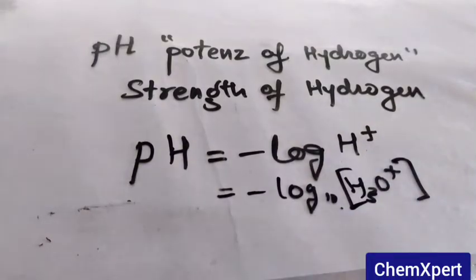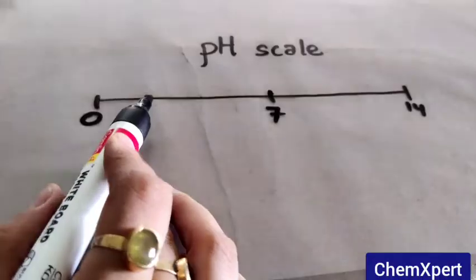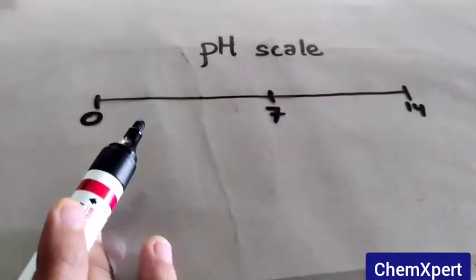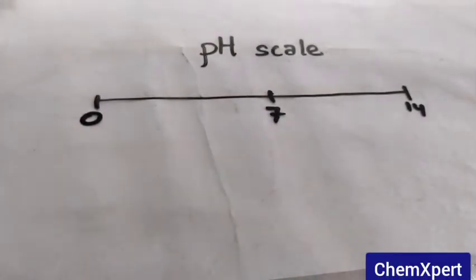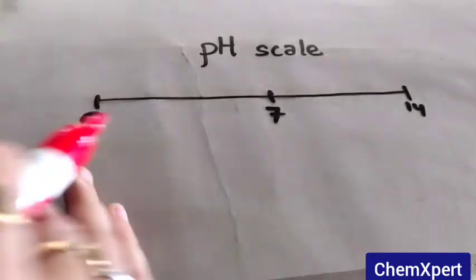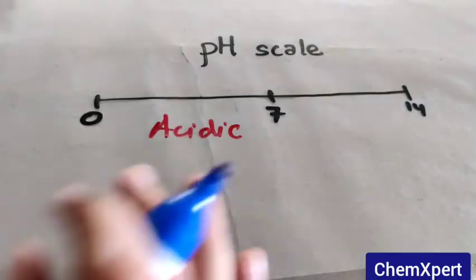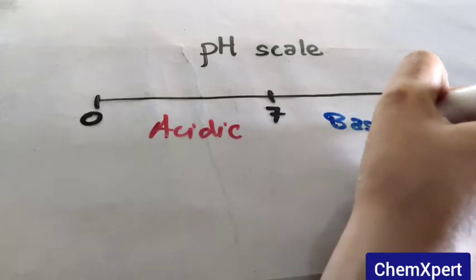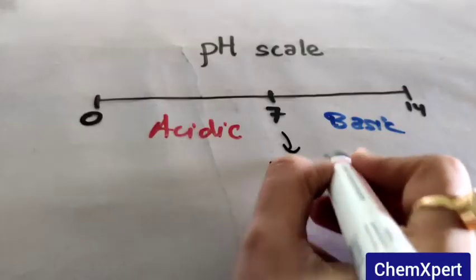The next term related to this is the pH scale. The pH scale indicates the concentration of H+ ion in the solution and it varies from 0 to 14, with 7 in between. When the pH value is lower than 7, we call it an acidic solution. When it is greater than 7 up to 14, it is a basic solution. And at 7, it is considered neutral.